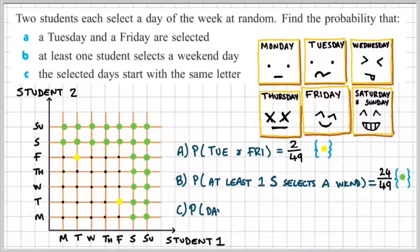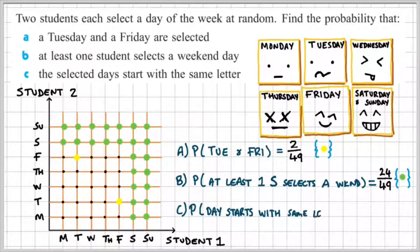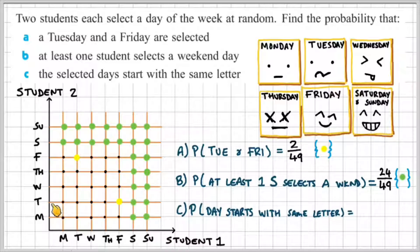Okay, Part C is the probability of the day starting with the same letter. So Student 1 and Student 2 both choose a day that starts with the same letter. So that could mean Student 1 chooses Monday, Student 2 chooses Monday; they start with the same letter.